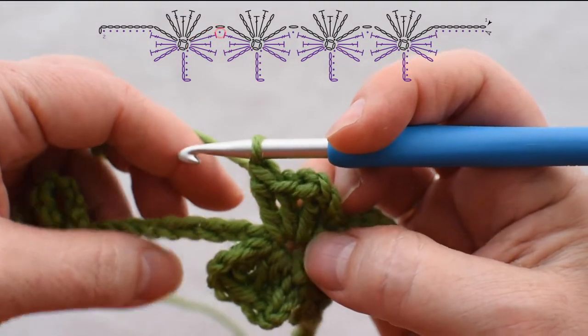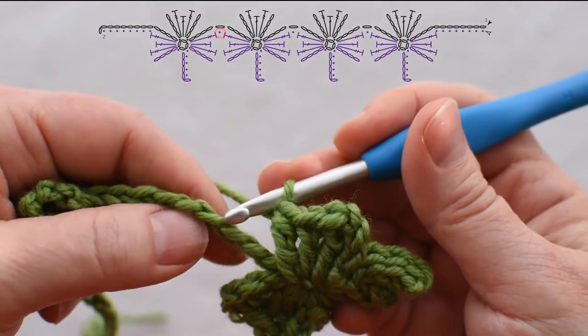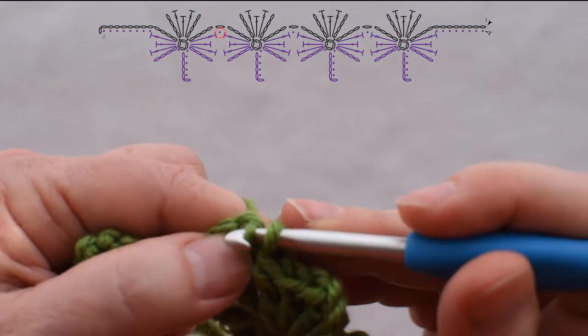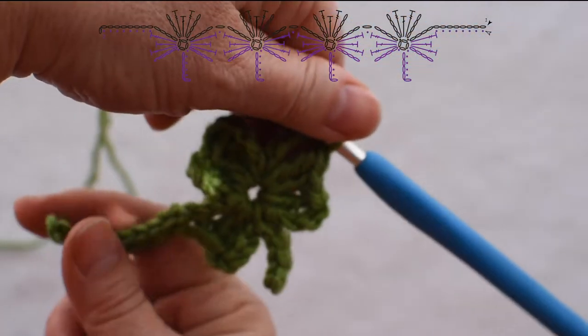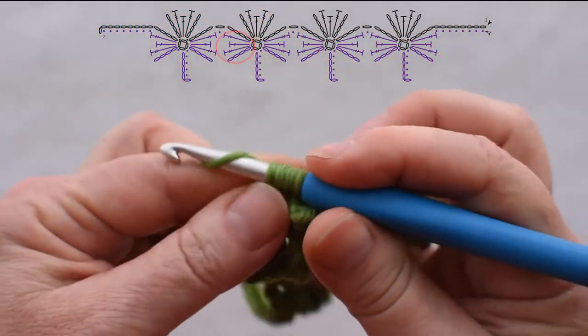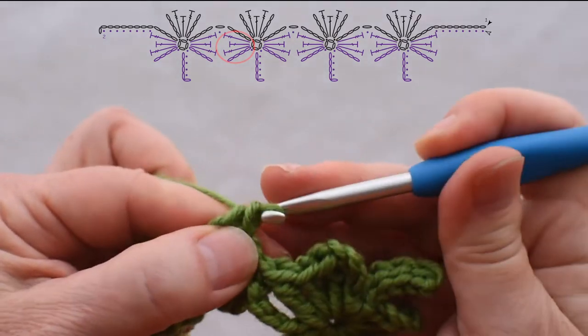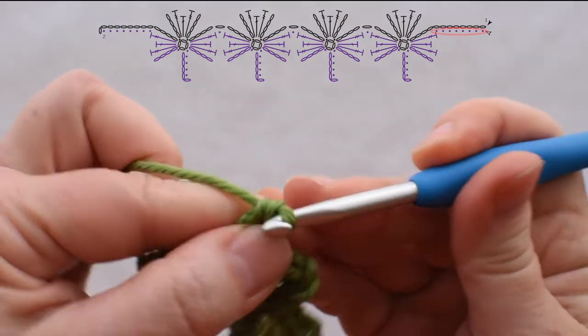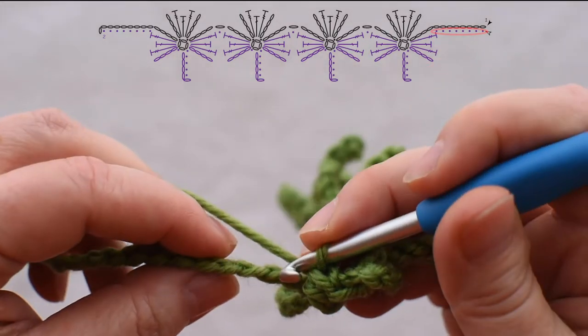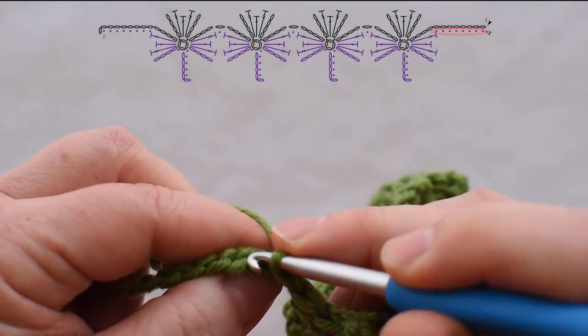When I'm ready to go on to the next shamrock I need to join my last treble by skipping the first four chains along here and slip stitching into the back bump of the next chain. That has completed my first complete shamrock. So I'll just continue working across the entire row. Complete the last leaf of the last shamrock by slip stitching into that fifth chain, then slip stitch in the back bump of each of the remaining seven chains.